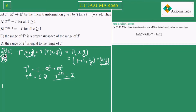Let us come to option B. Option B suggests that T to the power 2k+1 equals −T. Now T to the power 2k+1 can be written as T to the power 2k times T. Since T to the power 2k is identity, identity dot T gives T again. Since this is not equal to −T as the question claims, option B must be incorrect.